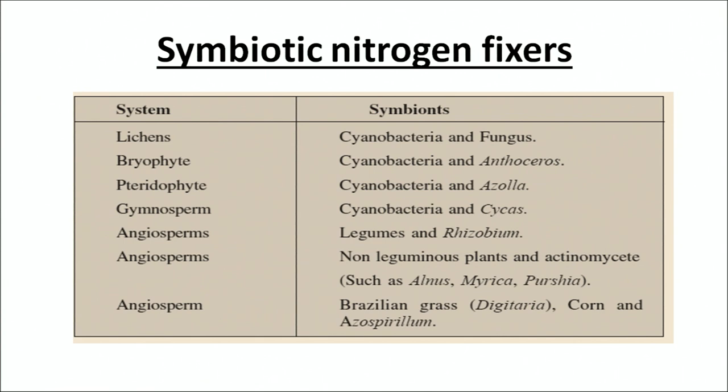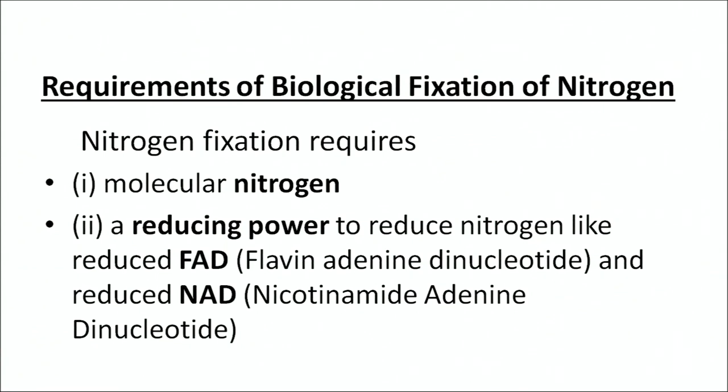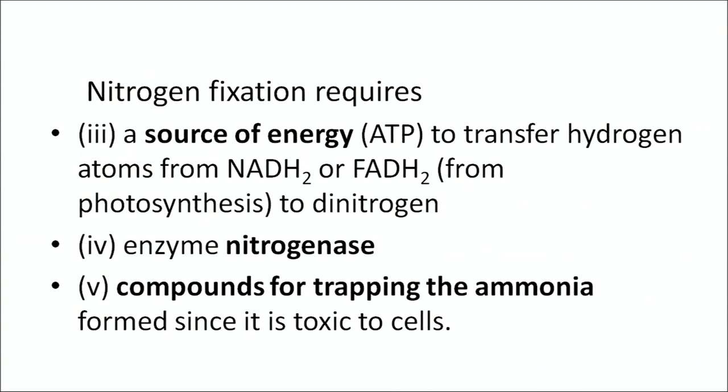Angiosperms also have an association with Brazilian grass, corn, and Azospirillum. The requirements for biological nitrogen fixation are: first, molecular nitrogen; second, a reducing power such as reduced FAD (flavin adenine dinucleotide) and reduced NAD (nicotinamide adenine dinucleotide); and a source of energy, chiefly ATP, which is needed to transfer hydrogen atoms from NADH₂ or FADH₂ to the dinitrogen molecule.